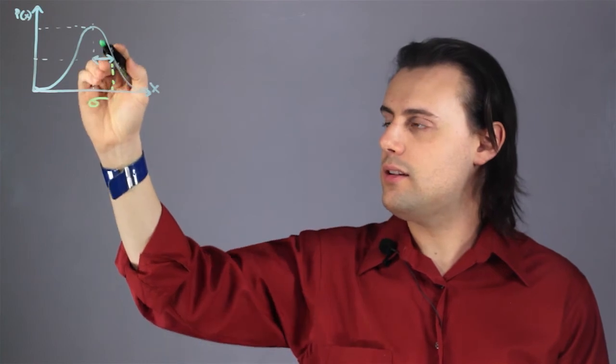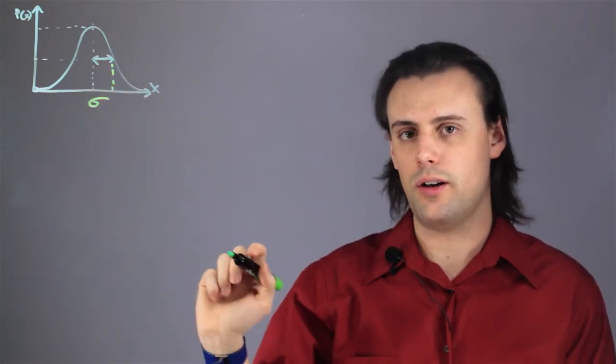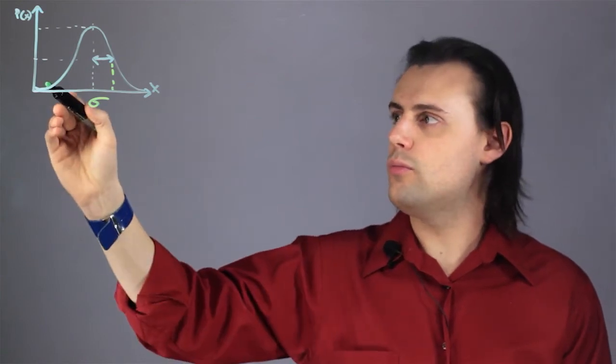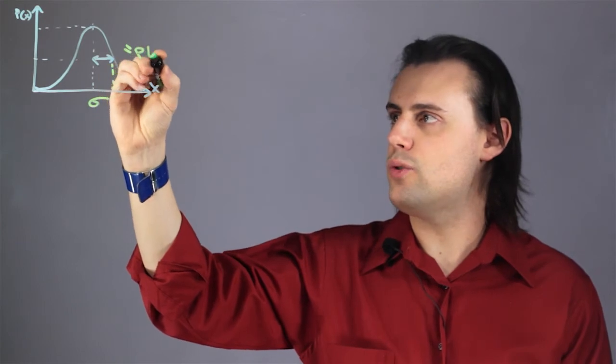If you had a discrete set of data points, you would be writing the definition in terms of a sum, but we're going to assume we have a continuous probability density function, or PDF for short.